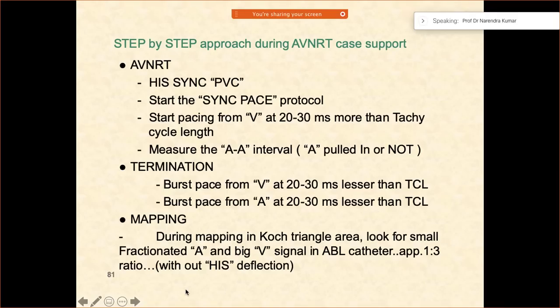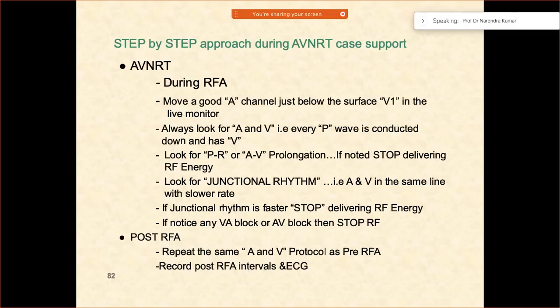Finally do the mapping. As I said, you have to go around the Koch triangle, look for the A to V ratio without any His deflection, and then ablate. There are exceptions — medicine is the field of exceptions. I have ablated some cases in which I had to even risk having His deflection as well, and was able to ablate without any problems.